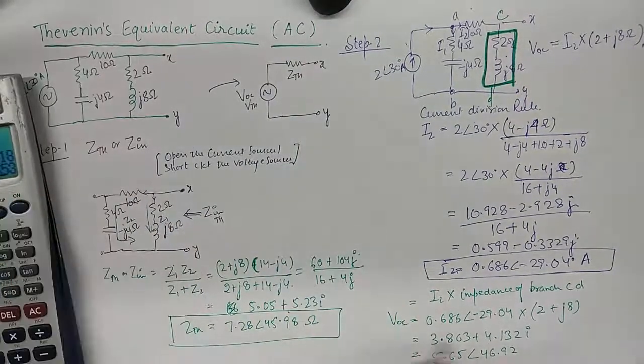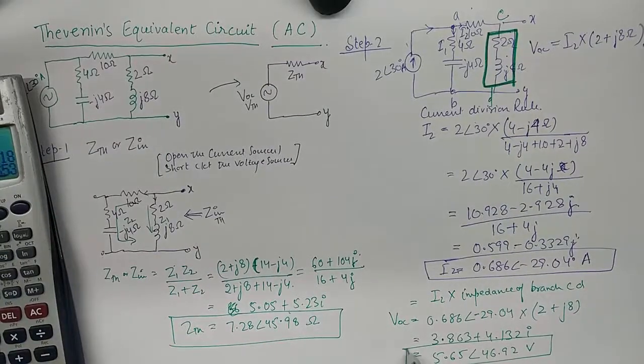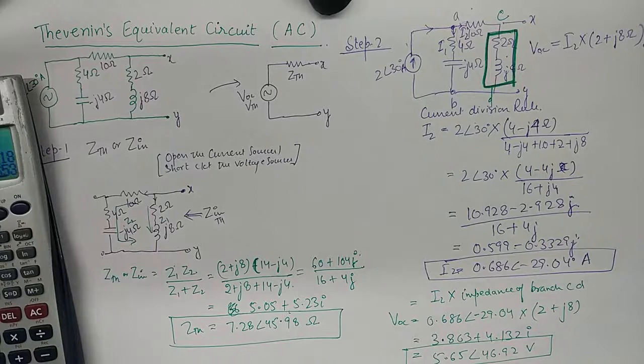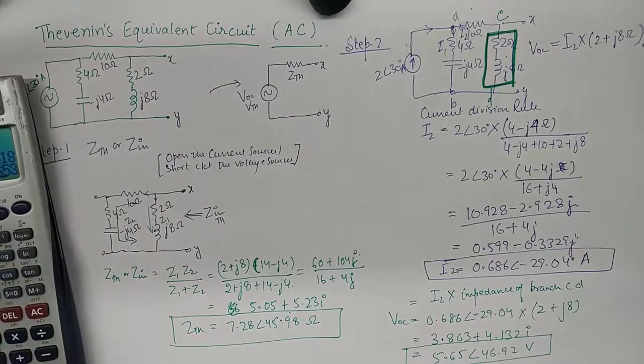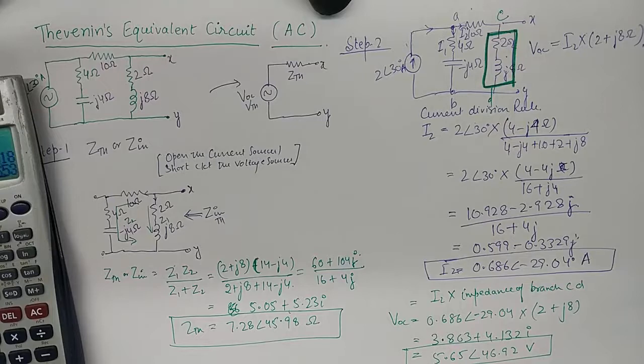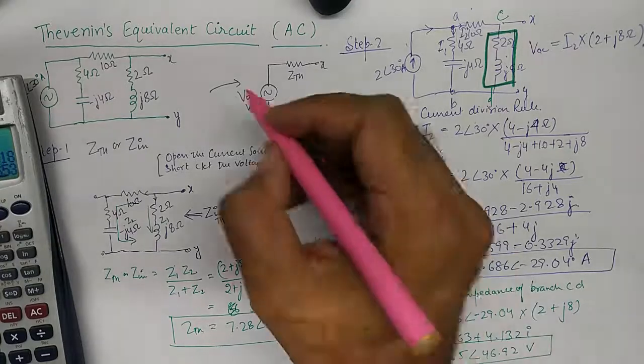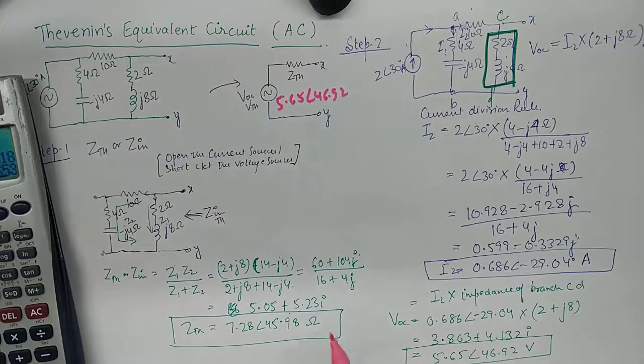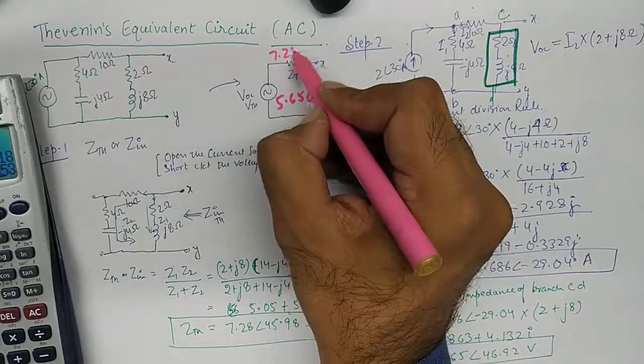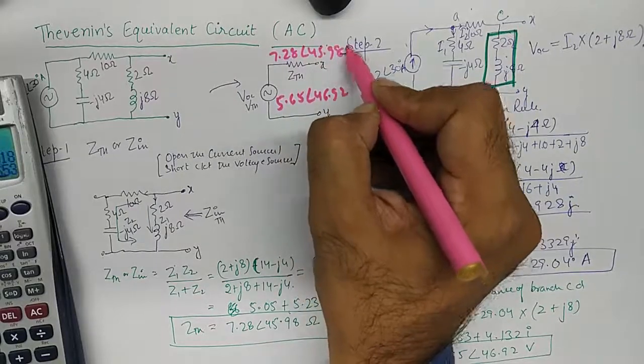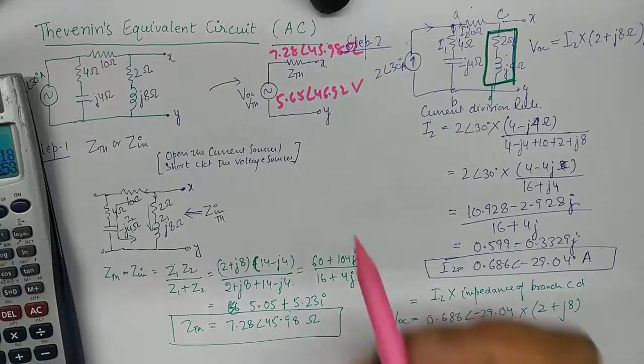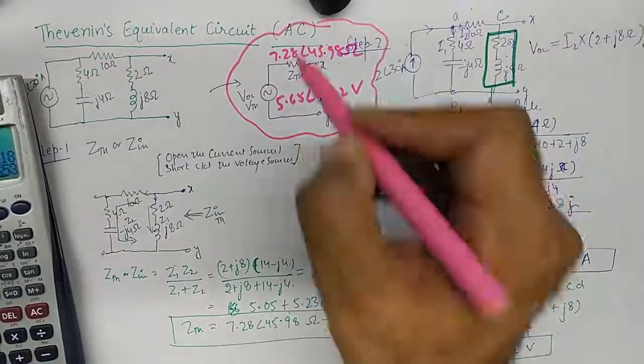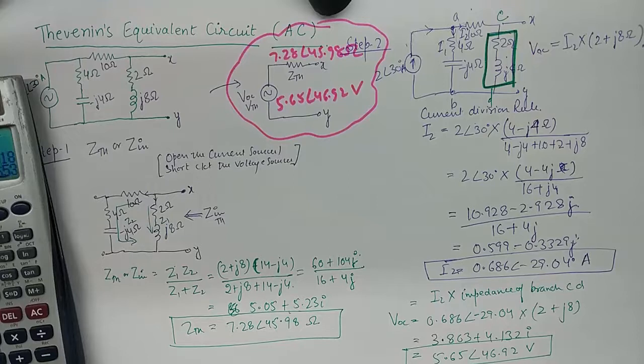So what I'm going to do is I'm going to start the brackets again, 0.686 and I'll put an angle here minus 29.04. And I'm going to multiply this with 2 plus 8i. And this gives me 3.863 plus 4.132 iota. If I were to calculate it in r triangle theta format it will be 5.65 volts with a phase lead of 46 degrees. And I hope this is clear enough, and finally I'm going to put these values: 5.65 angle 46.92 VTH and ZTH is 7.28 angle 45.98 ohms. And this becomes my Thevenin equivalent circuit for an AC complex circuit.